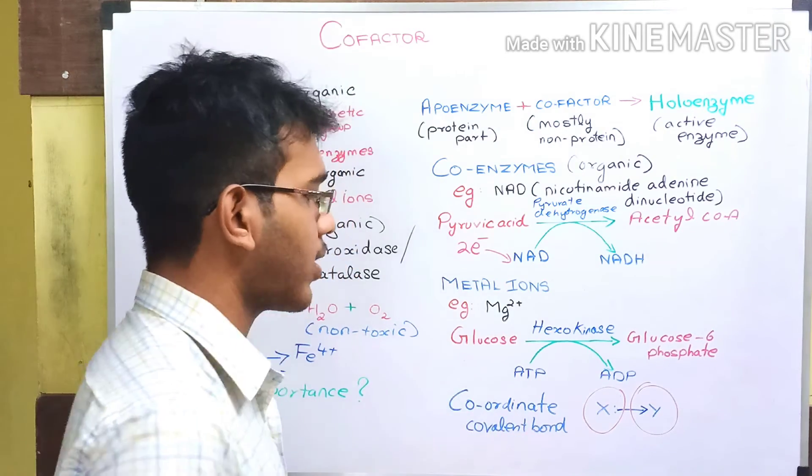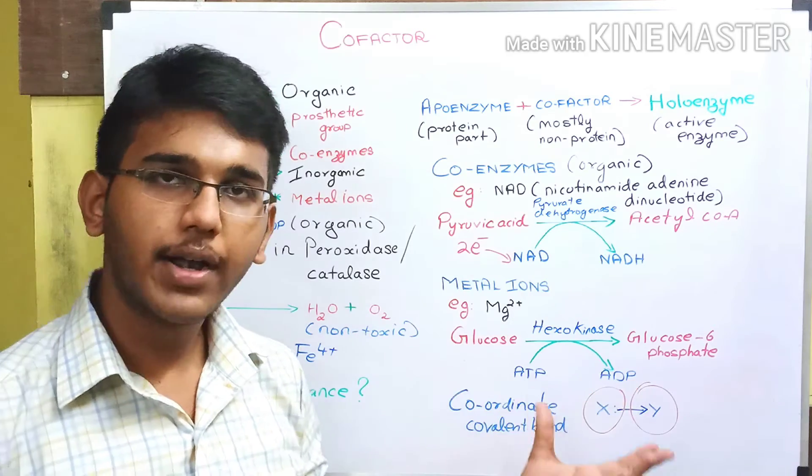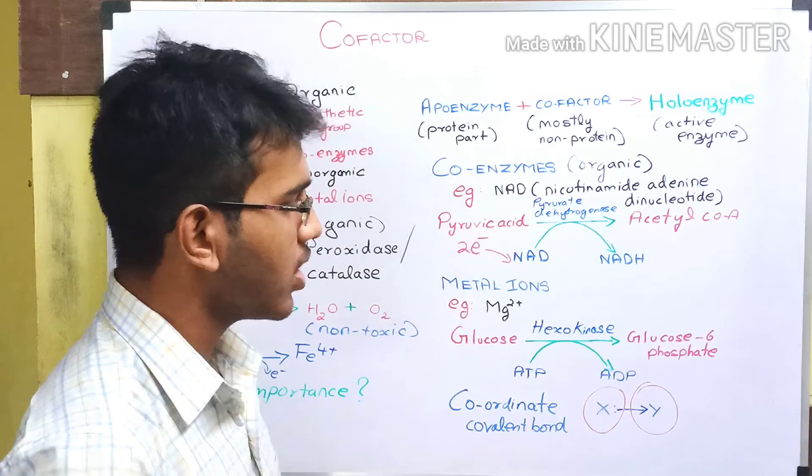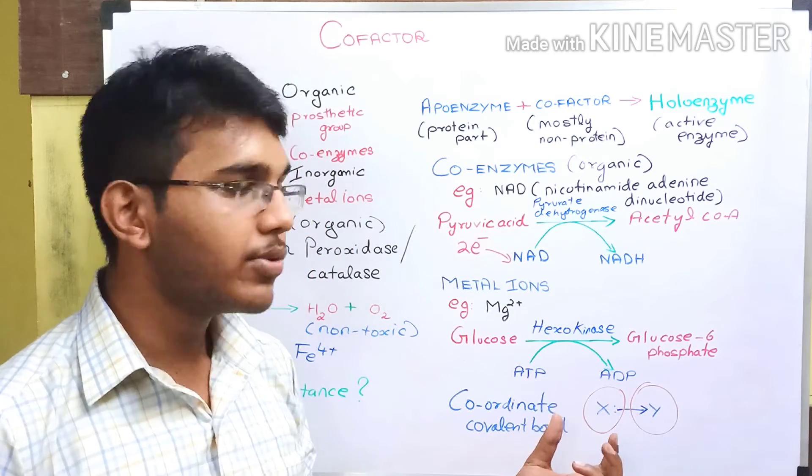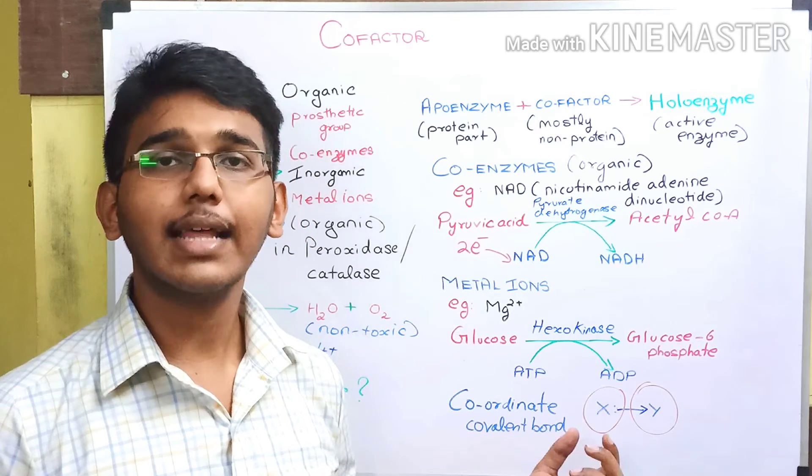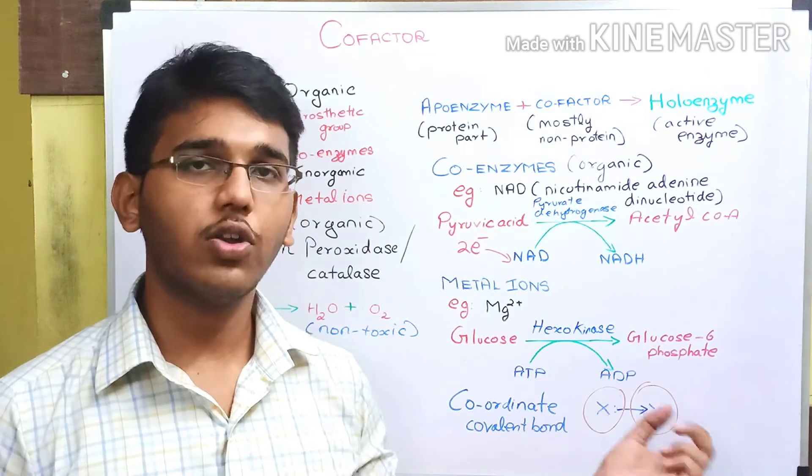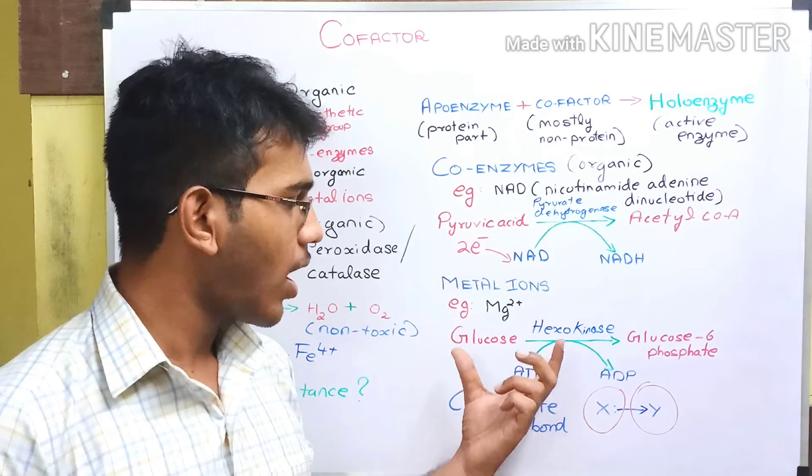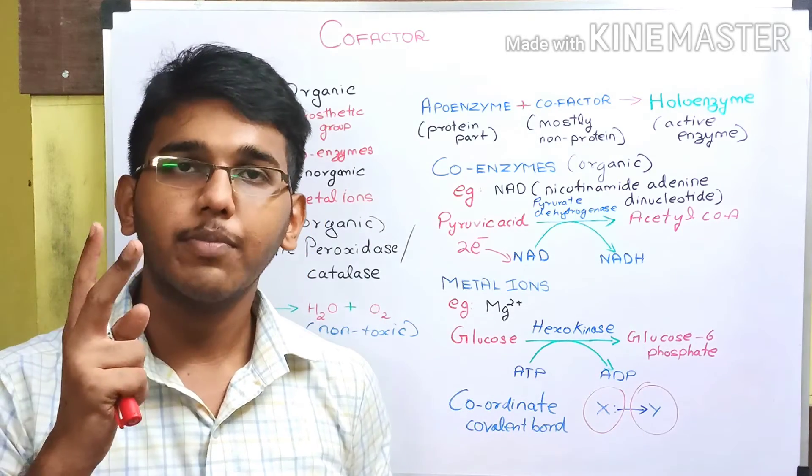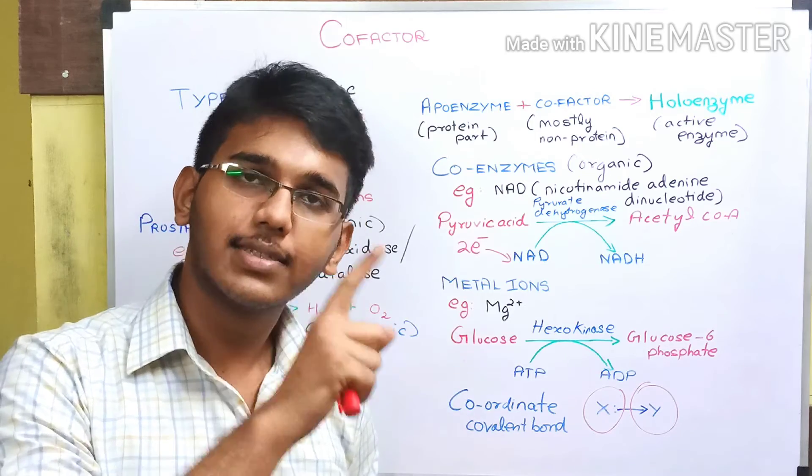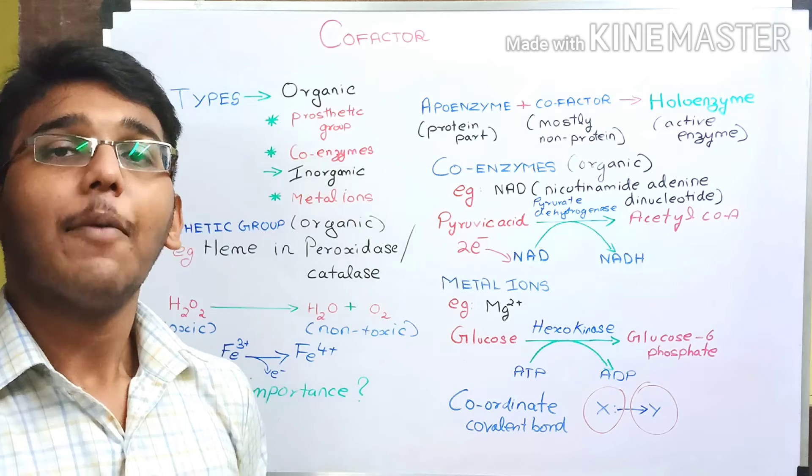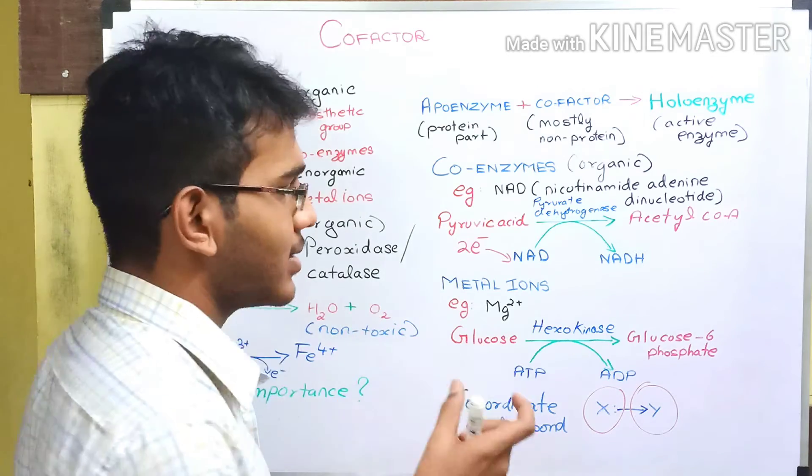So what is a coordinate covalent bond? A coordinate covalent bond is a bond formed as a result of sharing of electrons from the donor atom to the acceptor atom. Here the donor atom is a nucleophile or Lewis base and the acceptor atom is an electrophile or Lewis acid. This metal ion forms a coordinate covalent bond with both the side chain of the enzyme and the substrate molecule and helps in the proper functioning of the particular enzyme.